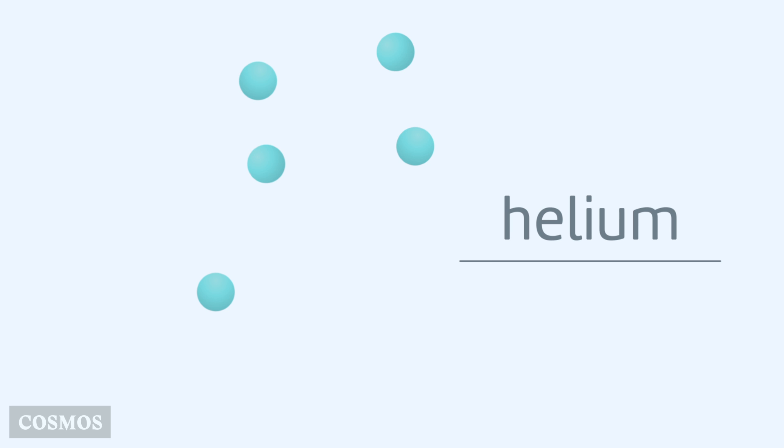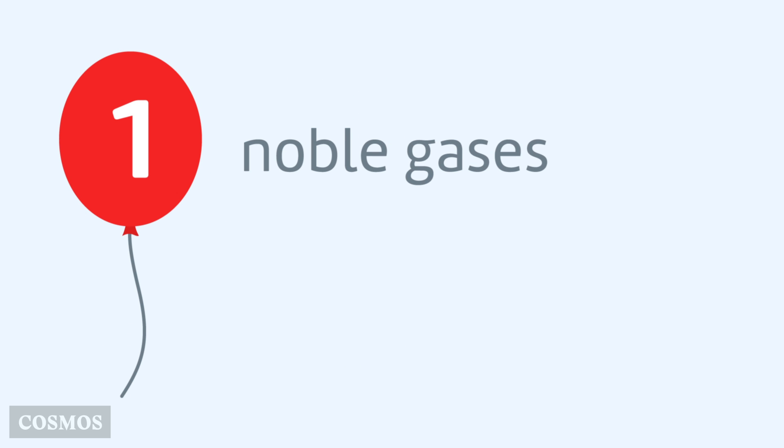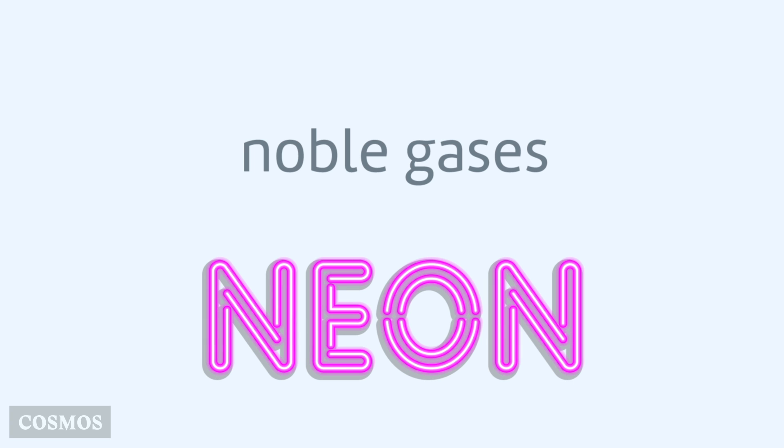In helium, for example, the atoms are happy to bounce around on their own. Elements like this are known as noble gases. Another example is neon, a gaseous element used in neon signs.